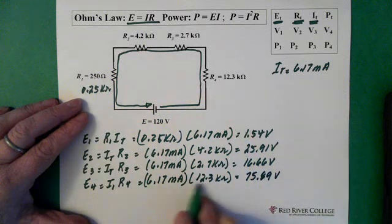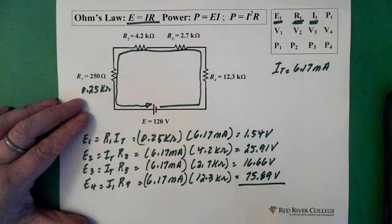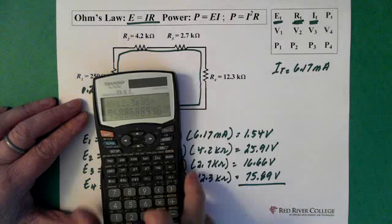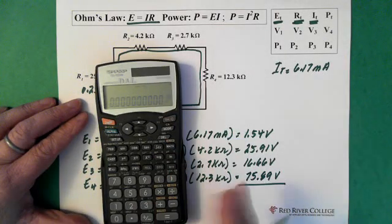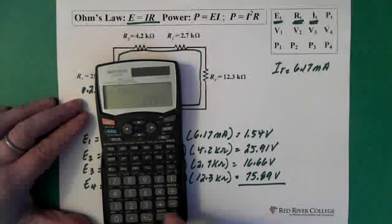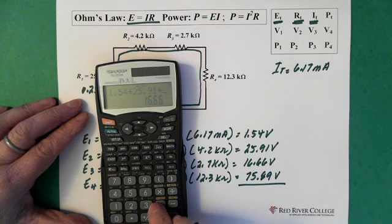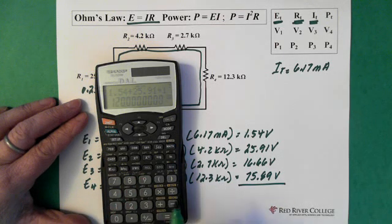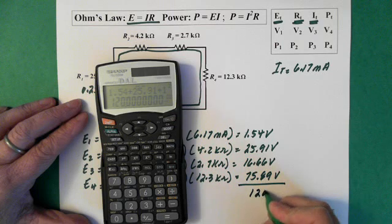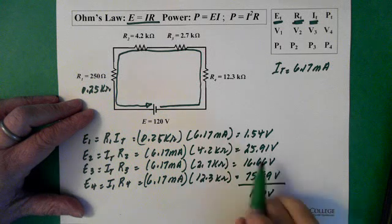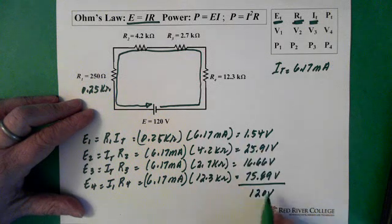Now we can see large resistor, large voltage. It's always a good idea to do a check. We're going to add up all these voltages. What should they equal? They should equal around 120. Depending on how many decimals we used, we'll be close. So 1.54 plus 25.91 plus 16.66 plus 75.89 equals. Holy smokes, look at that. 120 volts. That's pretty good. Normally, you don't get it so close. But because we rounded to two decimal places, that's why it's looking good.